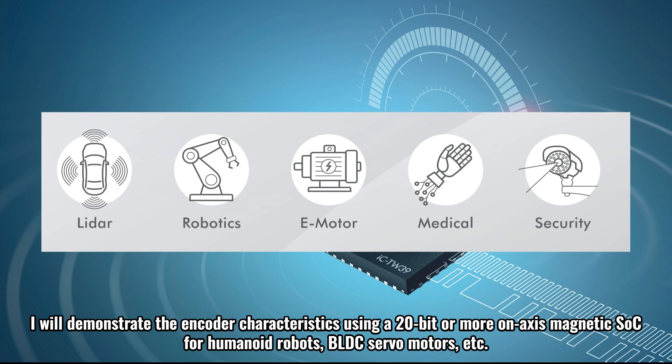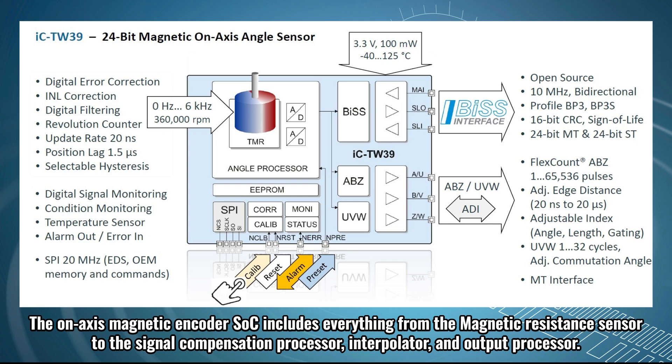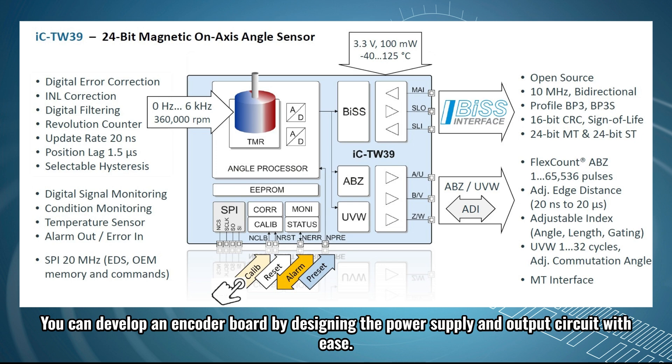I will demonstrate the encoder characteristics using a 20-bit or more on-axis magnetic SOC for humanoid robots, BLDC servo motors, etc. The on-axis magnetic encoder SOC includes everything from the magnetic resistance sensor to the signal compensation processor, interpolator, and output processor. You can develop an encoder board by designing the power supply and output circuit with ease.